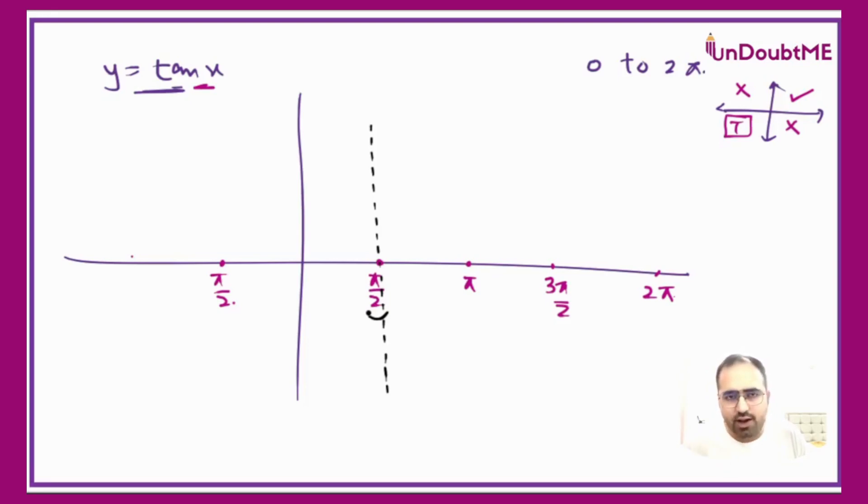These dotted lines are made in a span of π. From -π/2 to π/2, this span is of π units. Similarly, the next asymptotic line will come at 3π/2. In our analysis, we will not have any other asymptotic lines.